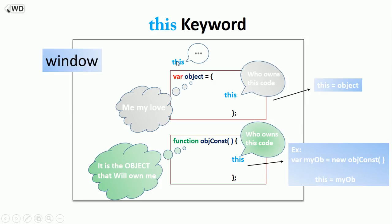To summarize: when `this` is inside code owned by the window, it is the window object. When `this` is inside code owned by a specific object, it is that object. And when `this` is inside a function, it will be owned by whichever object owns that function.